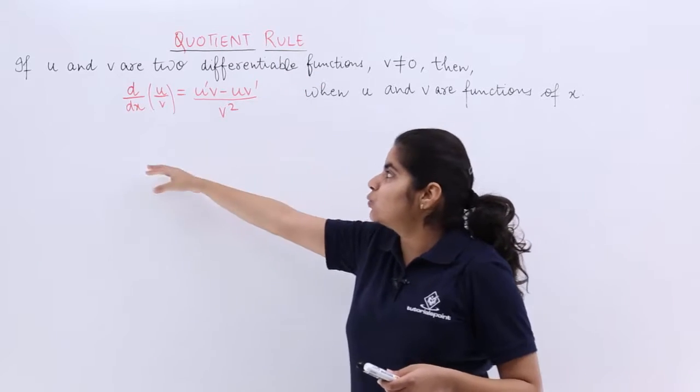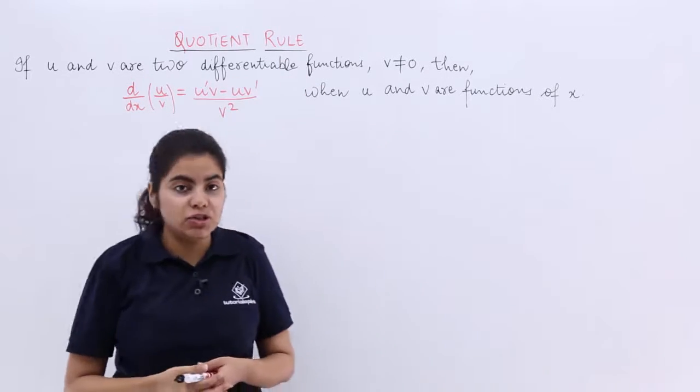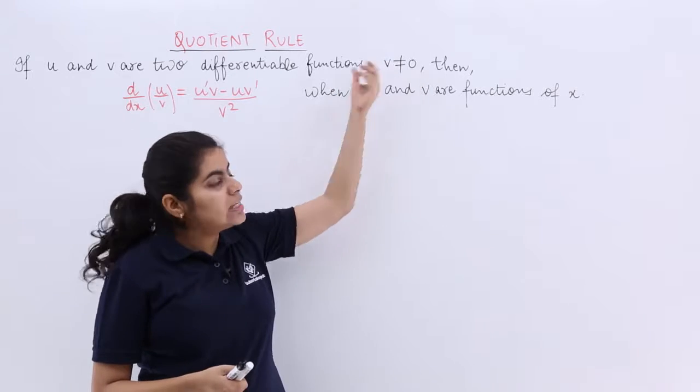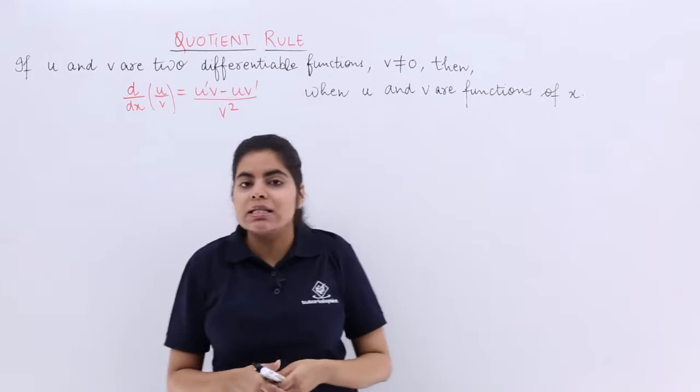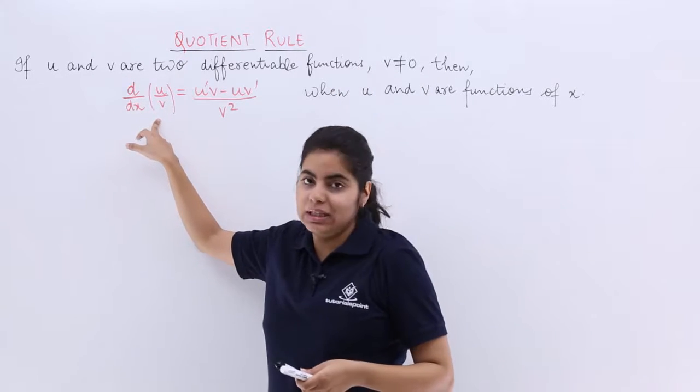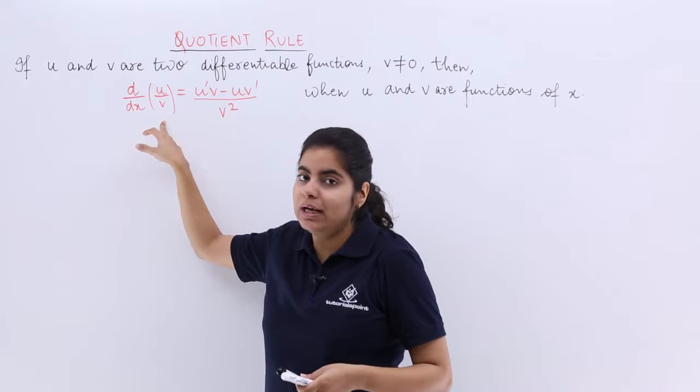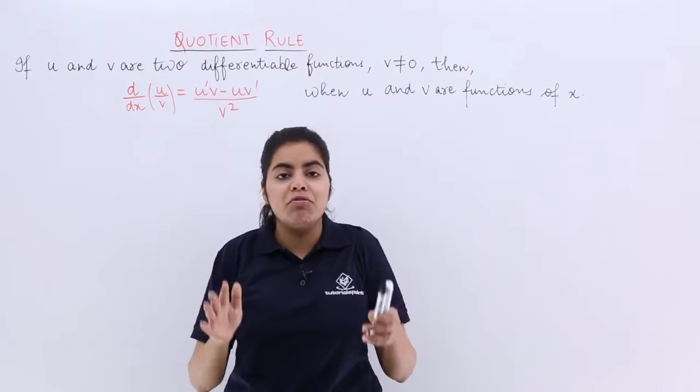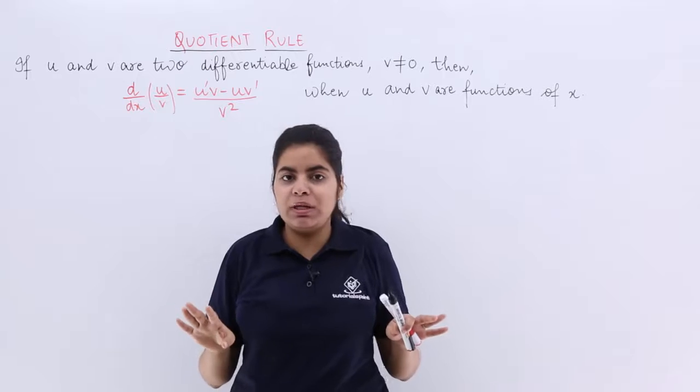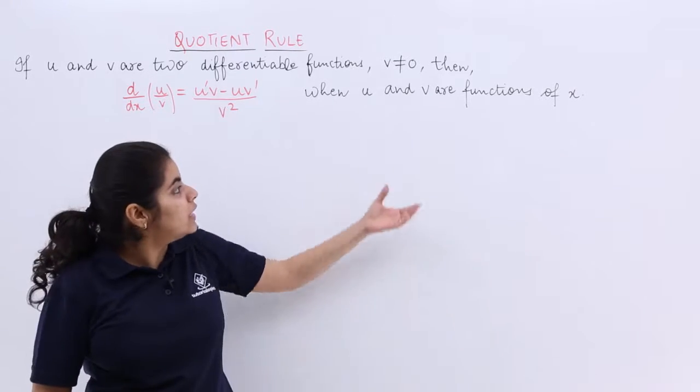The quotient rule states: if u and v are two differentiable functions such that v is not equal to 0, that means suppose you have u upon v - numerator upon denominator - and you know it will be defined when the denominator should not be equal to 0. That means v is not equal to 0, right?